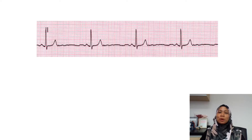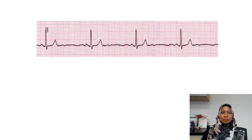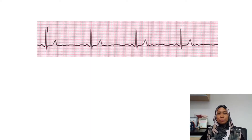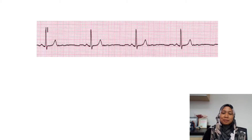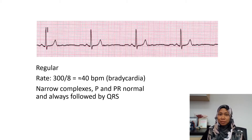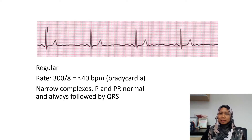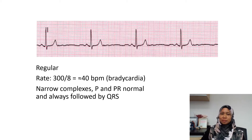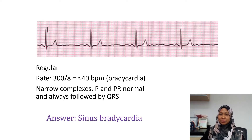So let's see what we have here. We have a regular rhythm with narrow complexes. However, the rate is slow, which is about 40 beats per minute. So this is a bradycardia. Otherwise, the other things look normal. So this is a sinus bradycardia.